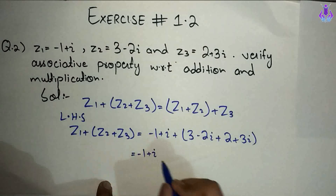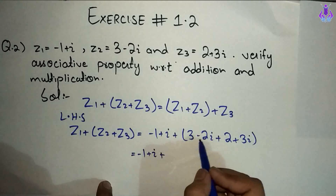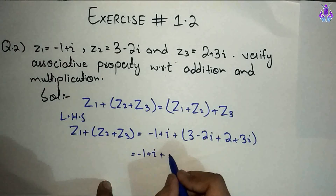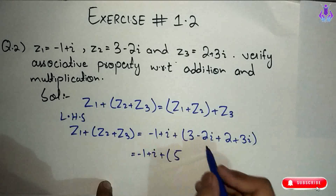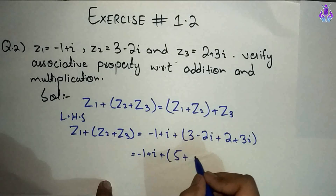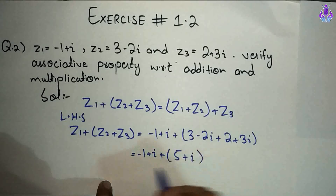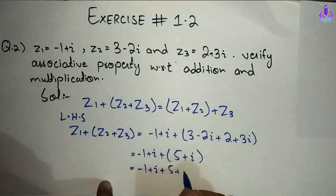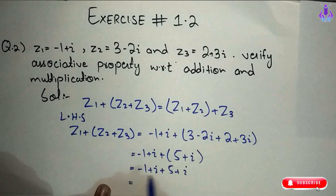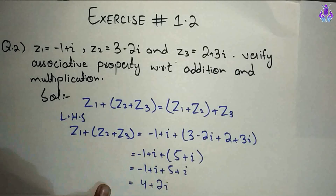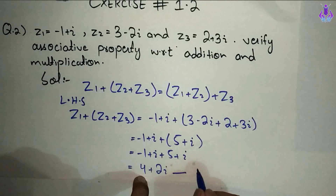Minus 1 plus iota, plus — real part ko real mein add karenge aur imaginary part imaginary mein. Yahan pe real part: 3 plus 2 equals 5. Signs: minus plus minus, so 2 minus 3 iota becomes just iota. Ab bracket hata dete hain: minus 1 plus iota plus 5 plus iota. Real parts: minus 1 plus 5 equals 4. Imaginary parts: iota plus iota equals 2 iota. So LHS equals 4 plus 2 iota.